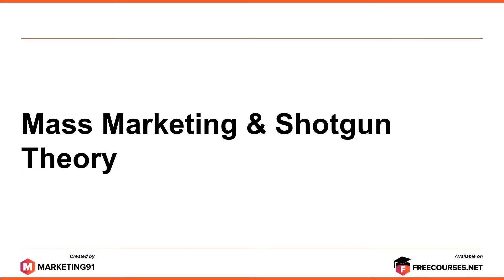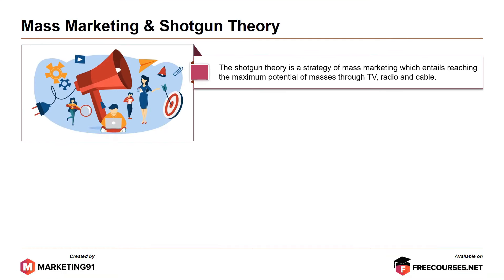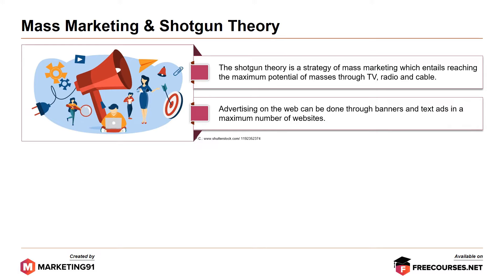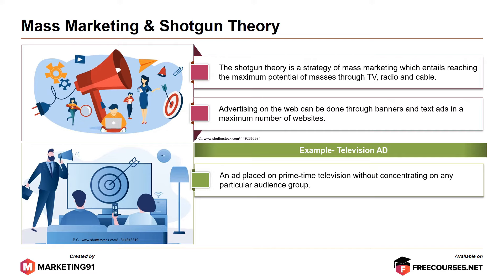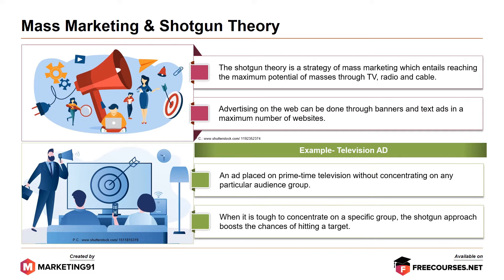Mass marketing and the shotgun theory: The shotgun theory is a strategy of mass marketing which entails reaching the maximum potential of masses through TV, radio and cable. Advertising on the web can be done through banners and text ads in a maximum number of websites. This aims to get plentiful eyeballs then turn into sales. For example, an ad placed on prime time television without concentrating on any particular audience group. When it is tough to concentrate on a specific group, the shotgun approach boosts the chances of hitting a target.